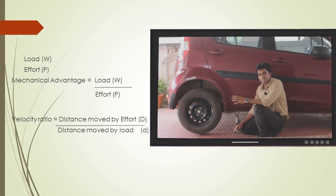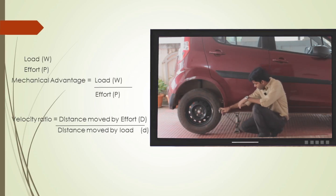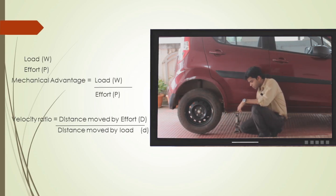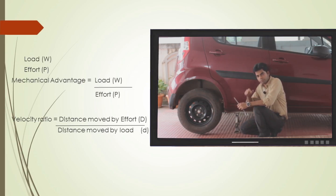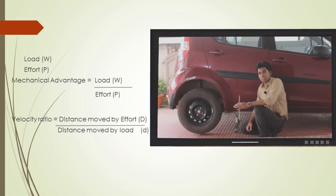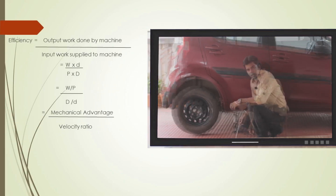Next is the velocity ratio. It is the ratio of distance moved by effort to the distance moved by load. In this device, when I rotate the lever by one complete revolution, and the length of the lever is l, the total distance covered by the lever is 2πl — the whole circumference. With that one rotation, the screw jack is lifted by one pitch. So the velocity ratio is 2πl divided by the pitch of the screw.